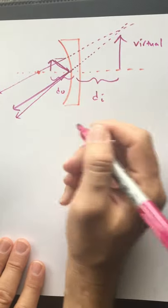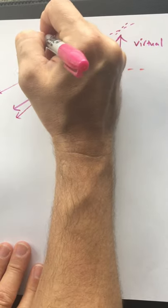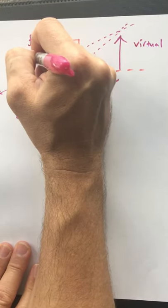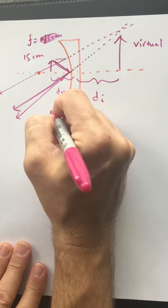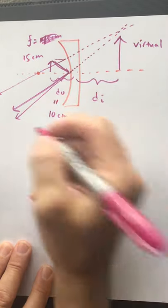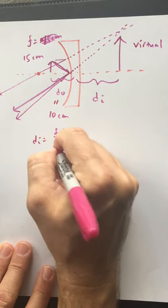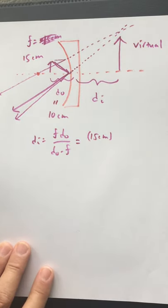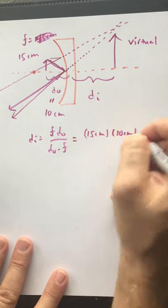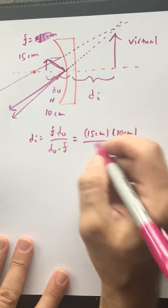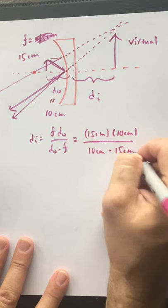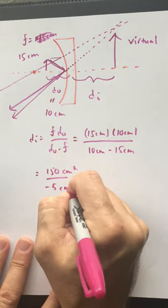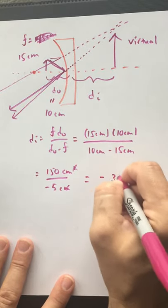The image is virtual, which means it's not projectable. Let's run the math: focal length is 15 centimeters, distance to the object is 10 centimeters — closer than my focal point. DI equals F times DO over (DO minus F), which is 15 centimeters times 10 centimeters over (10 minus 15 centimeters). I get 150 square centimeters over minus 5 centimeters — I get minus 30 centimeters.